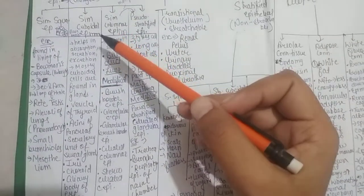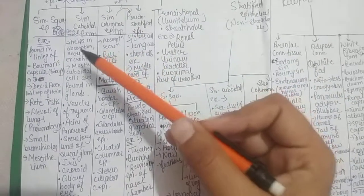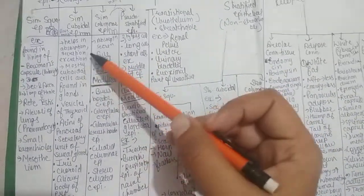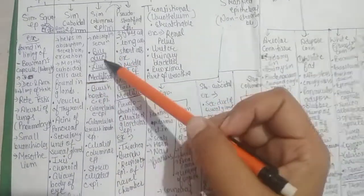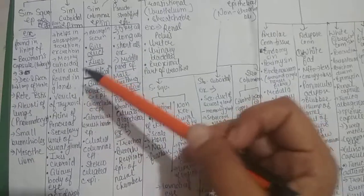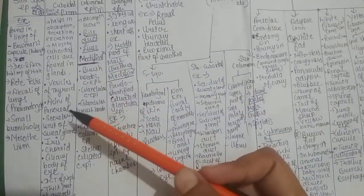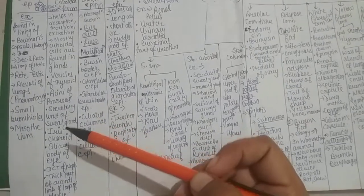Simple cuboidal epithelium helps in absorption, secretion, and excretion. Mostly cuboidal cells are found in glands, vesicles of thyroid, acini of pancreas, secretory units of sweat glands.